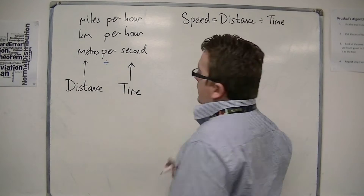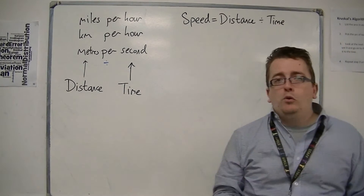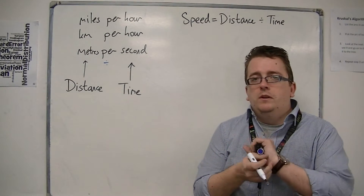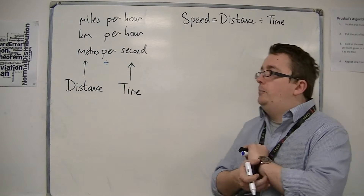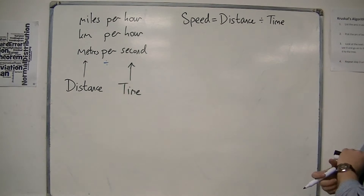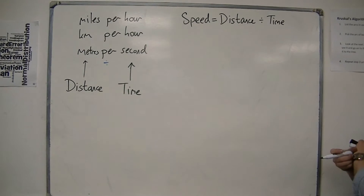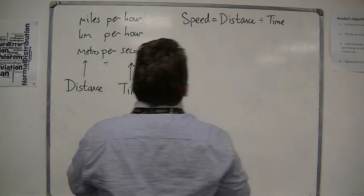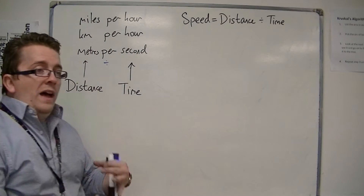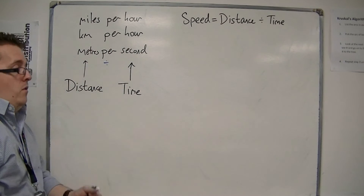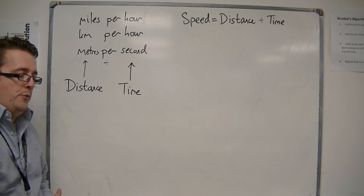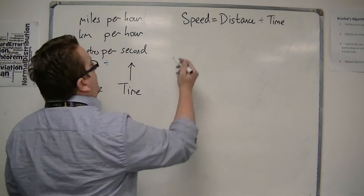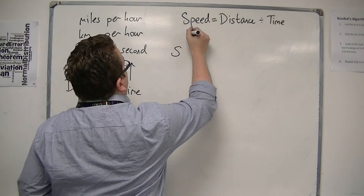So speed is distance divided by time, and this is the all-important equation that we need to remember: speed equals distance divided by time. That leads you on to a nice representation of speed, distance, and time in a triangle.